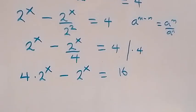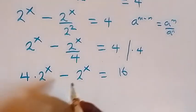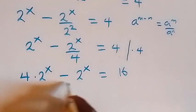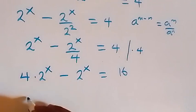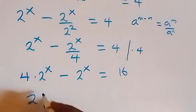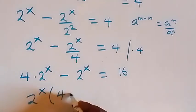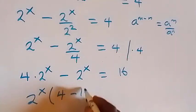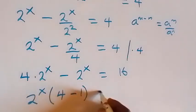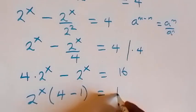Now let's factor 2 raised to power x out. We have 2 raised to power x into bracket (4 minus 1) equals to 16.